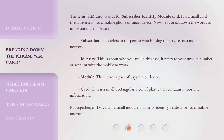Subscriber: this refers to the person who is using the services of a mobile network. Identity: this is about who you are — in this case, it refers to your unique number or account with the mobile network. Module: this means a part of a system or device. Card: this is a small, rectangular piece of plastic that contains important information. Put together, a SIM card is a small module that helps identify a subscriber to a mobile network.